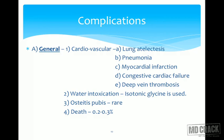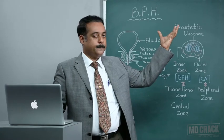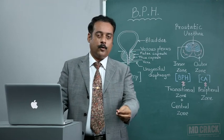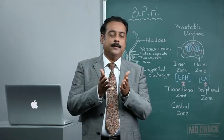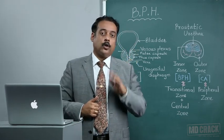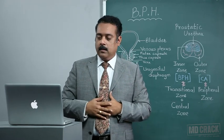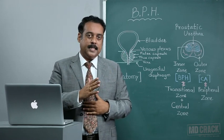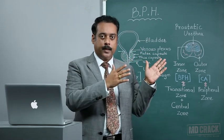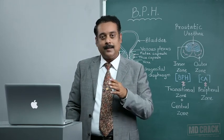Previously, TURP required continuous irrigation and simple water was used — a bucket of water at height was poured into the channel to keep vision clear during cystoscopic evaluation and surgery. This water caused problems due to retention into the body. This side effect can be minimized with the use of isotonic glycine solution instead of the conventional bucket of plain water.